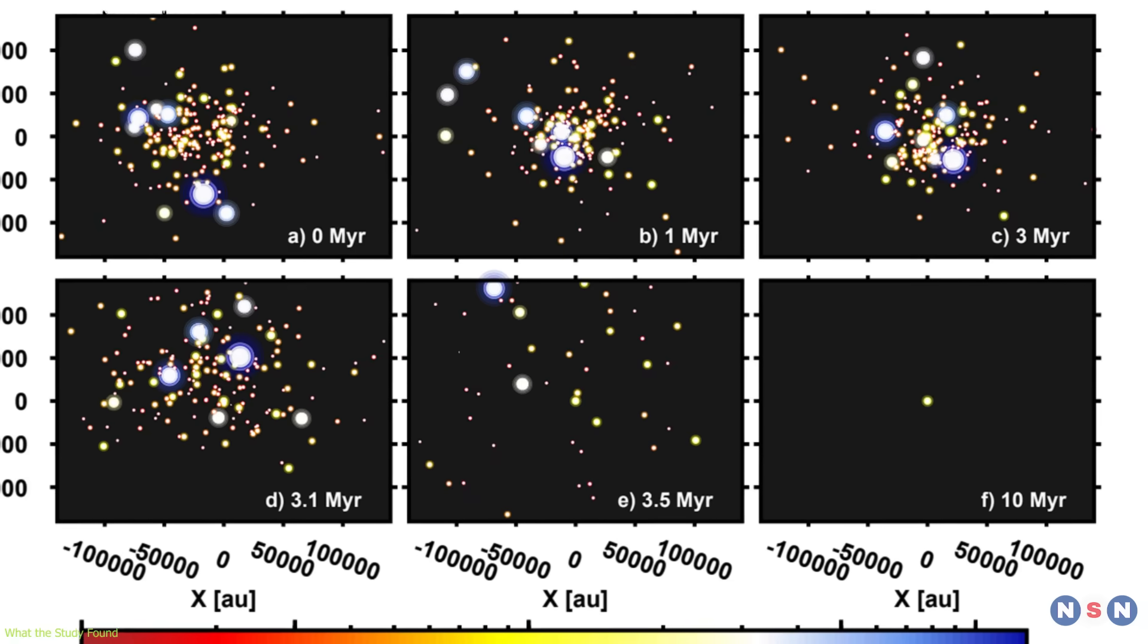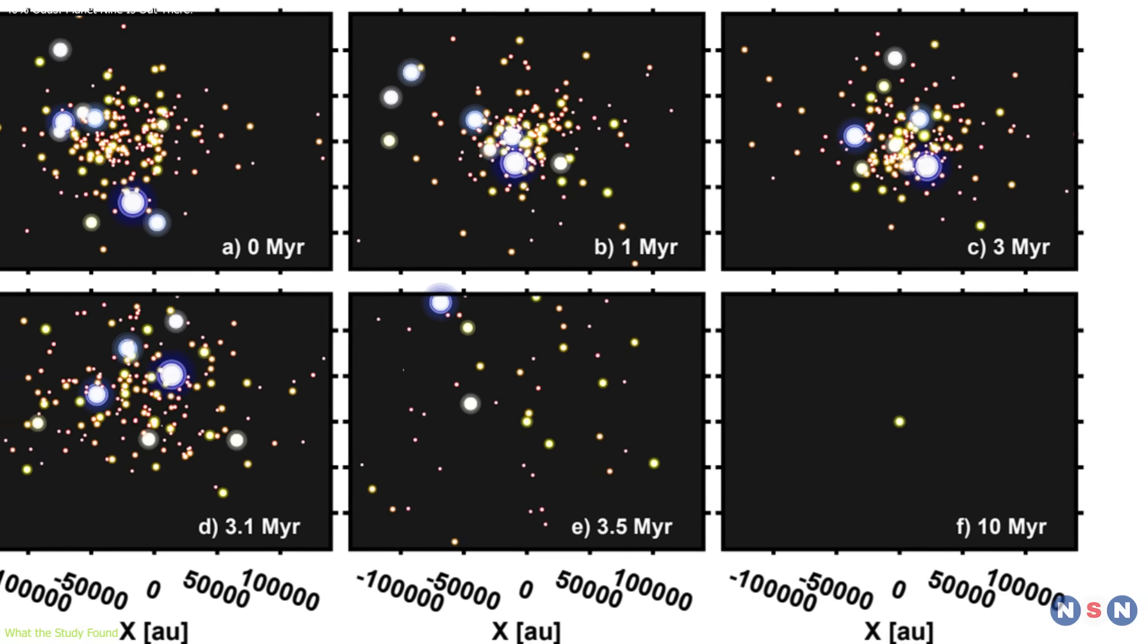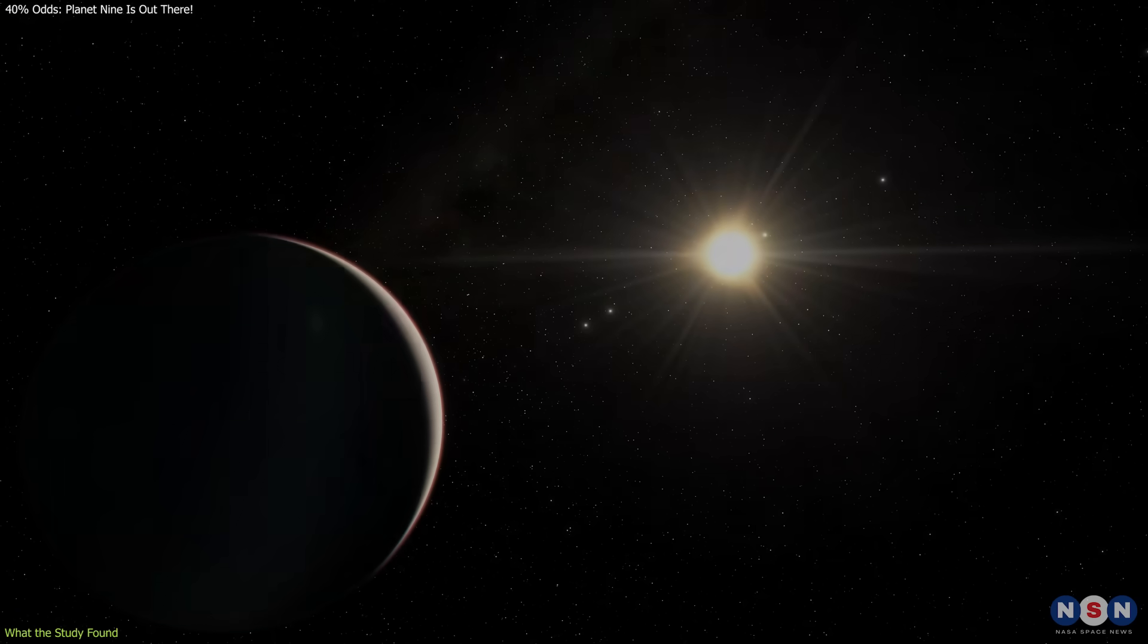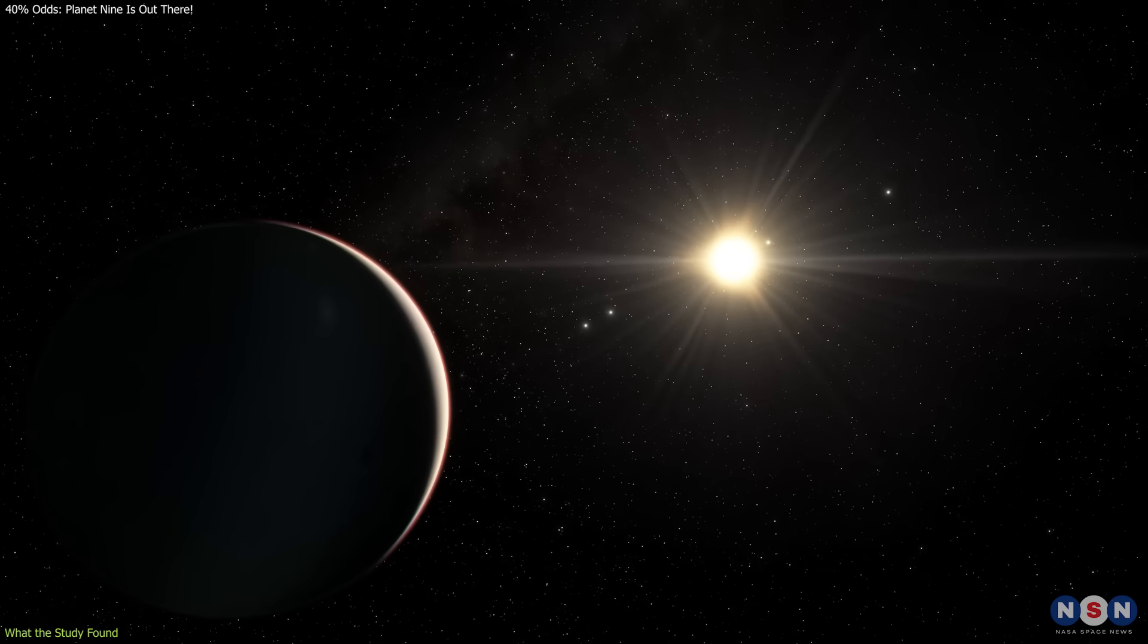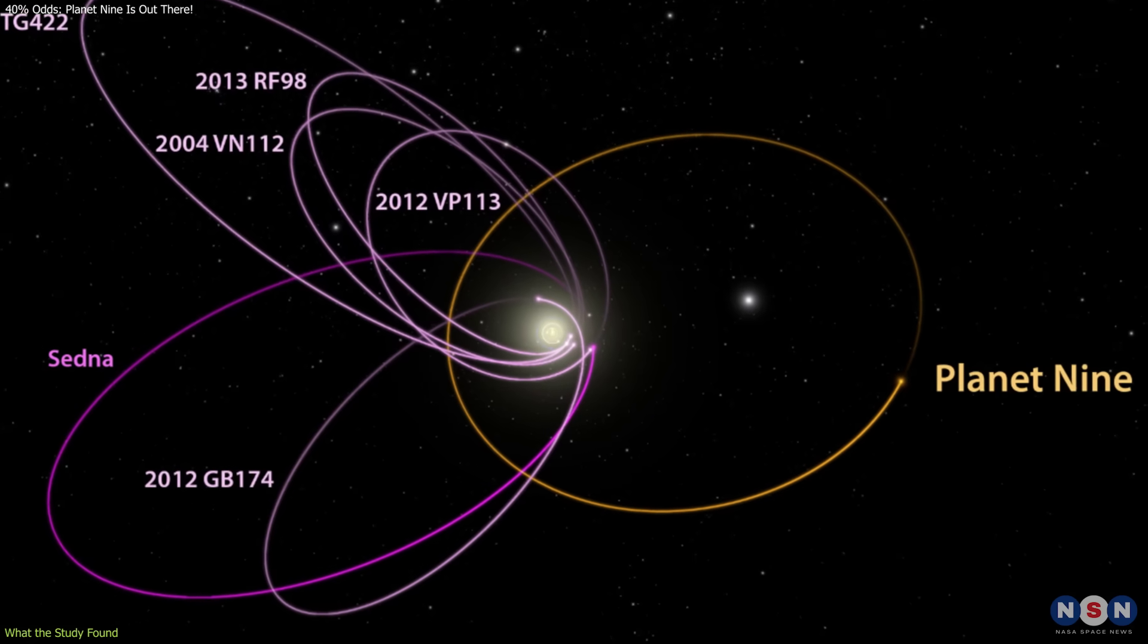The type of orbit this process creates is consistent with the hypothesized orbit of Planet 9, several hundred astronomical units away with a long, eccentric path around the Sun.